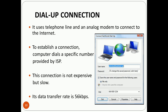Next is dial-up connection. A dialog box appears when you use a dial-up connection — you fill in the entries and click the dial button to establish the connection. It uses a telephone line and an analog modem to connect to the internet. The computer dials a specific number provided by the ISP. This connection is not expensive but is slow — the data transfer rate is 56 Kbps.